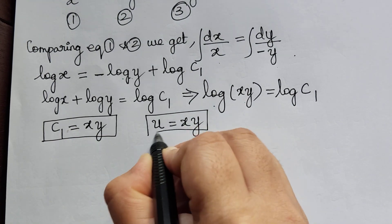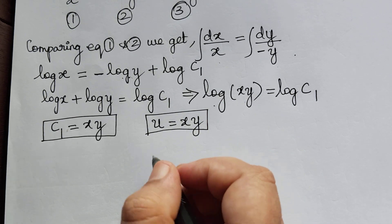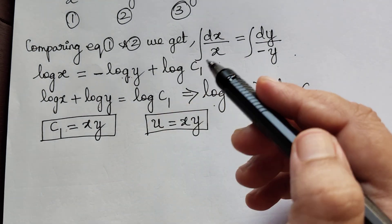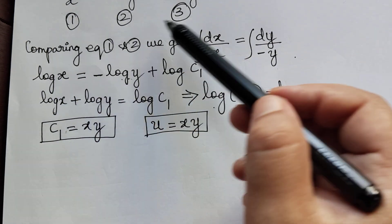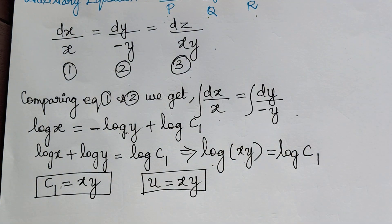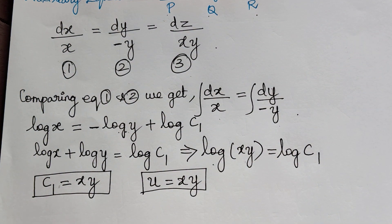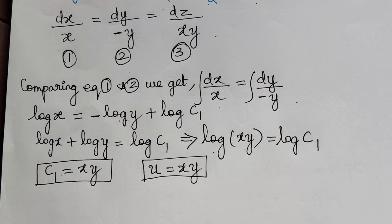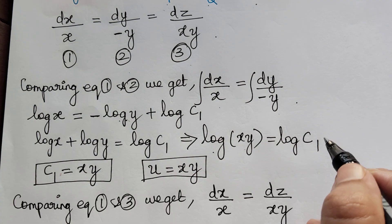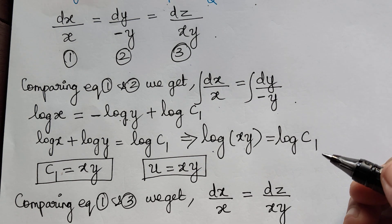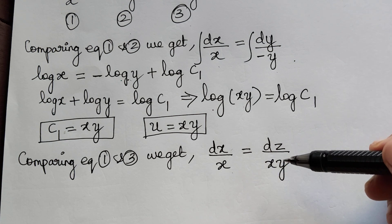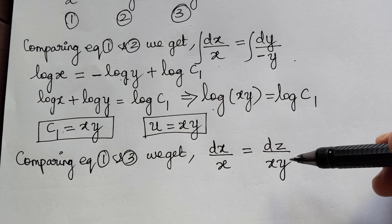The next step is to find the second solution, for which we compare the other two equations — either 1 and 3, or 2 and 3; it is completely our choice. Here I am going to compare equations 1 and 3, which gives dx by x equal to dz by xy.